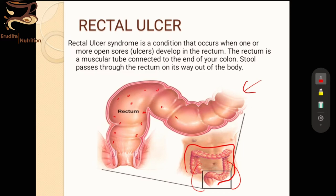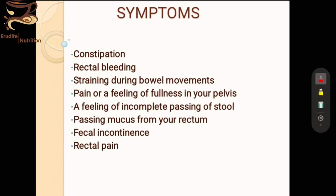The rectum is the muscular tube connected to the end of the colon; stool passes through it on its way out of the body. Whenever one or more open sores or ulcers develops in the rectum, it is called a rectal ulcer. Symptoms include constipation, rectal bleeding — meaning fresh bright red blood mixed with stool, also called melena — and straining during bowel movements as a consequence of constipation.